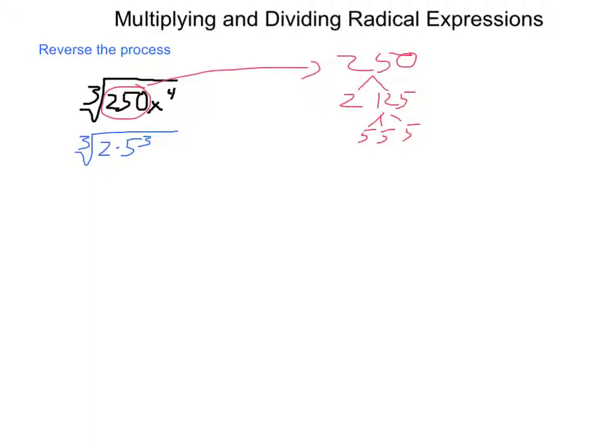Then we have x to the fourth, which comes out to be x times x cubed. The reason I break it like this is we're looking for groups of three. So, I pulled out three and left behind. If I take this five cubed and work the cubed root of it, I end up with just a five. If I take the cubed root of x cubed, I will get simply x. It leaves me the cubed root of two times x.